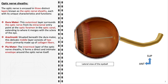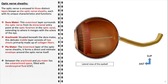The pia mater, the innermost layer, is a delicate and highly vascularized membrane that intimately adheres to the surface of the optic nerve, playing a crucial role in maintaining its structural integrity and providing a supportive framework for the blood vessels. Between the arachnoid and pia mater lies the subarachnoid space, filled with cerebrospinal fluid. This fluid-filled space cushions the optic nerve and helps maintain a stable environment for the nerve fibers. The cerebrospinal fluid here is in continuous communication with that within the brain, facilitating the balance of fluid and pressure dynamics across the central nervous system.